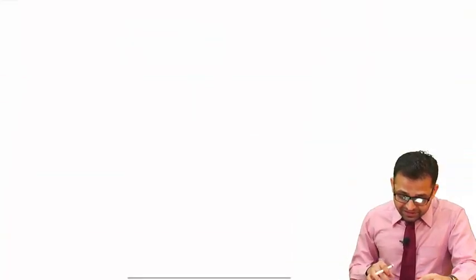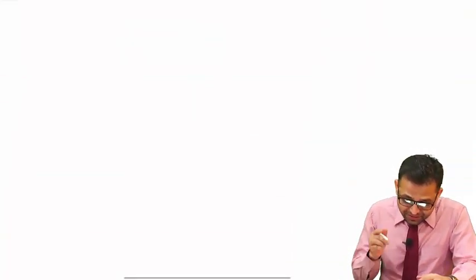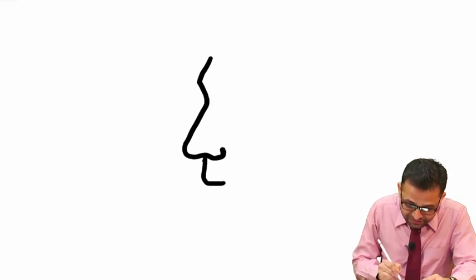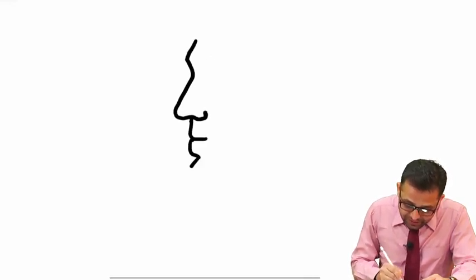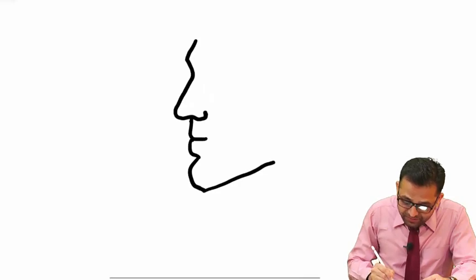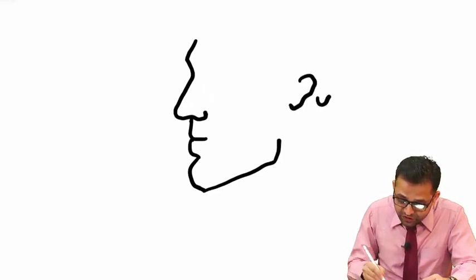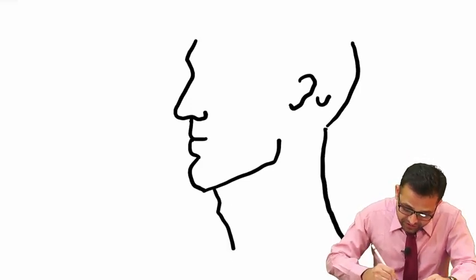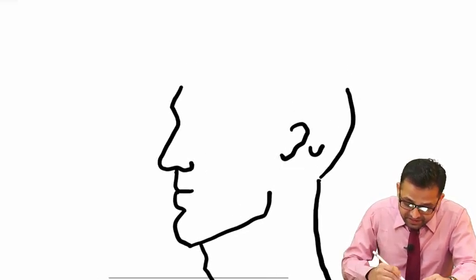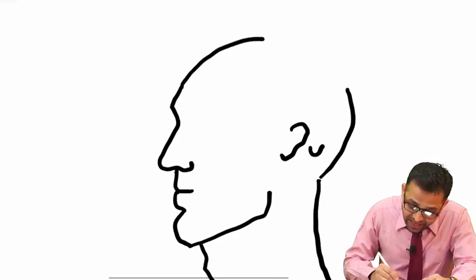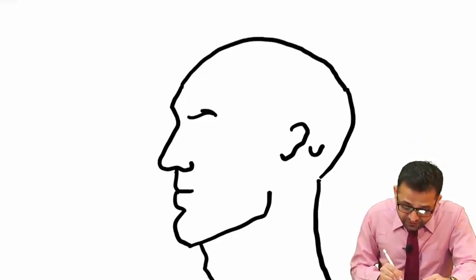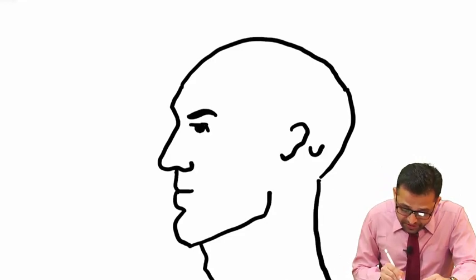Catch this diagrammatic presentation. Suppose this is our face — this is the chin, margin of mandible, angle of mandible, here is the ear, just behind the ear is the mastoid process, and this is our occipital area. We are showing the neck part, here is our scalp and the cranial vault. For the beauty of the image, we are drawing the eyebrows and the eyes.